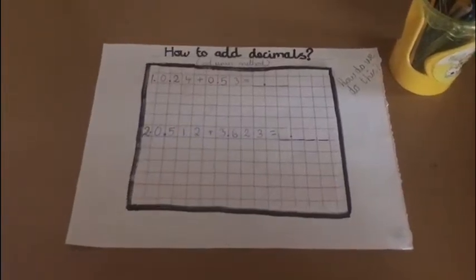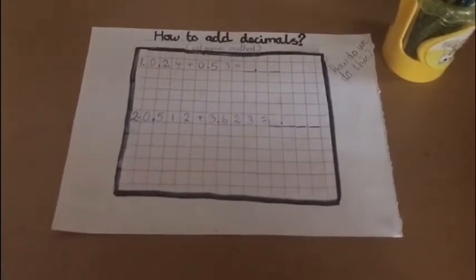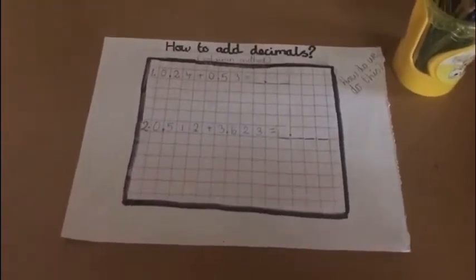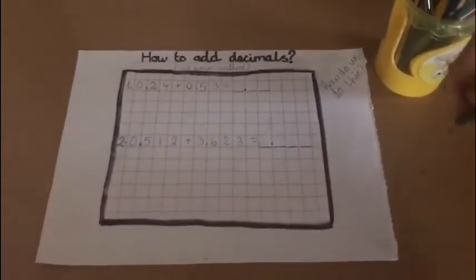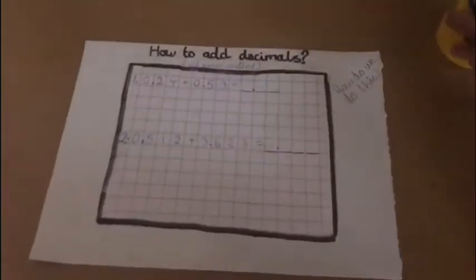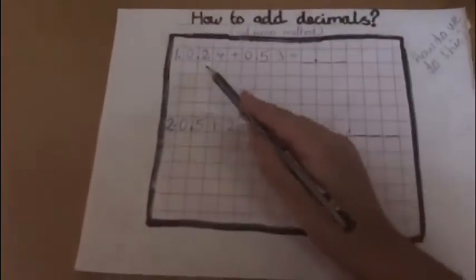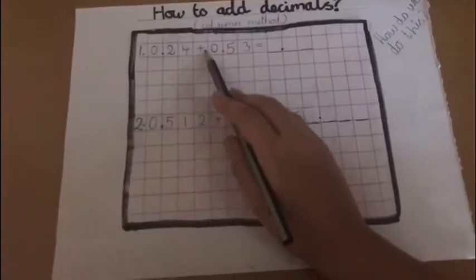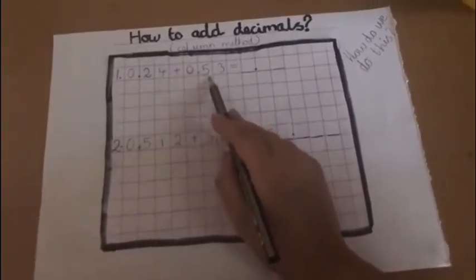How to add decimals. How exactly do we do this? Here's an example: 0.24 plus 0.53.